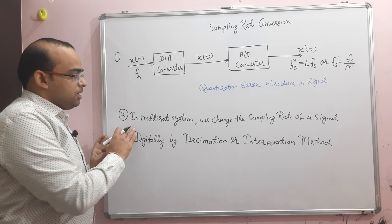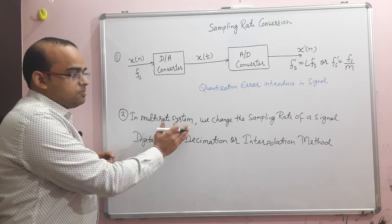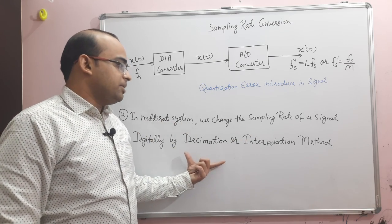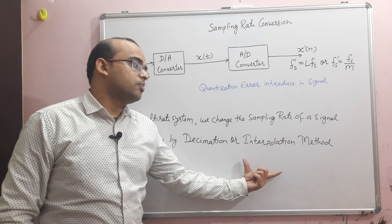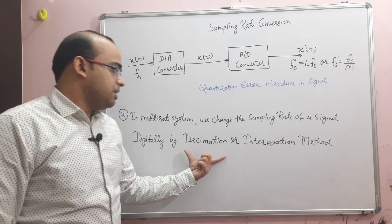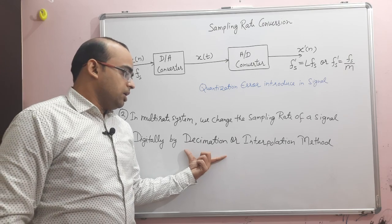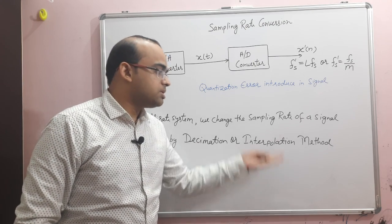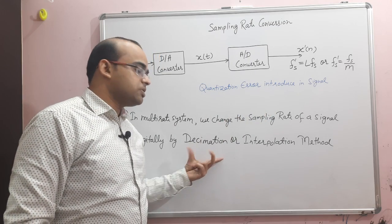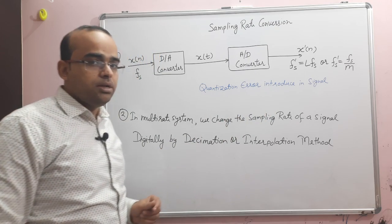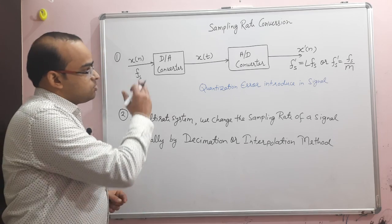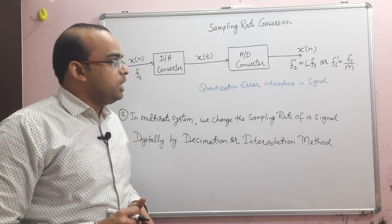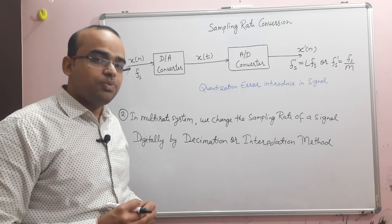The second method is: in multi-rate systems we change the sampling rate of a signal digitally, by the decimation process or by the interpolation process. In decimation we use a down-sampler to decrease the sampling rate. In interpolation we use an up-sampler to increase the sampling rate.